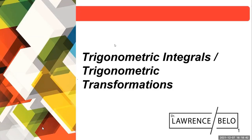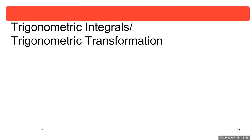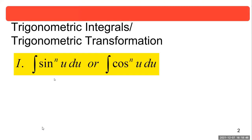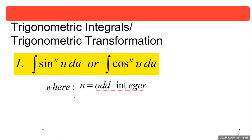We're covering trigonometric integrals and trigonometric transformations. The tools available here: one, in the event that you have the integral of sine raised to the n of u du, or cosine raised to the n of u du, where n is an odd integer — take note of this — if n is odd, the tool to use is basically the Pythagorean identity.